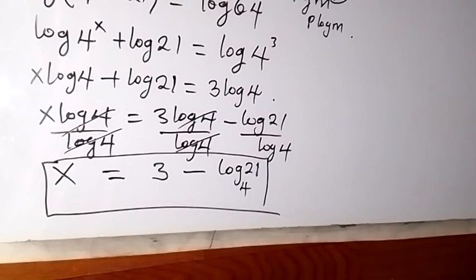And that is the value of x — x equals 3 minus log 21 base 4. We have come to the end of this problem. Thank you for joining us; don't forget to subscribe to this channel for more videos, and see you in the next class. Bye for now.